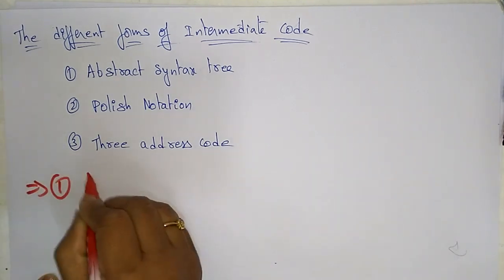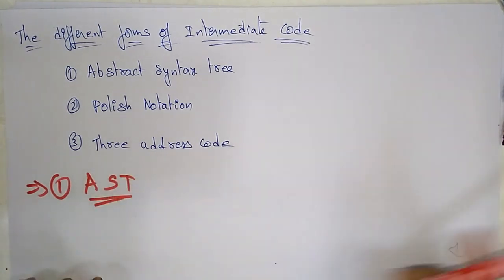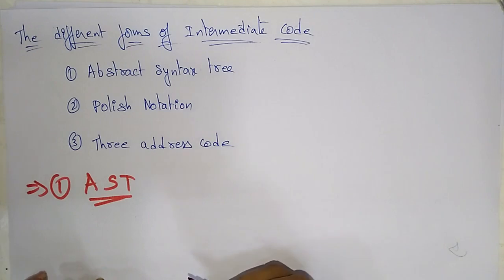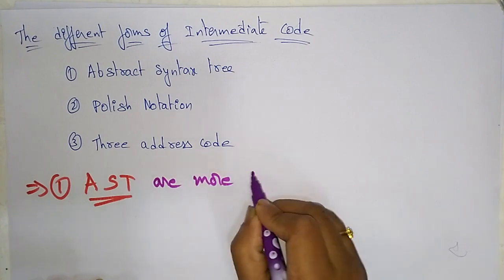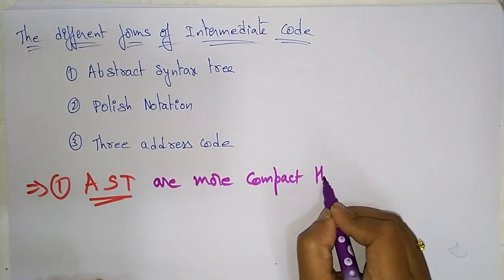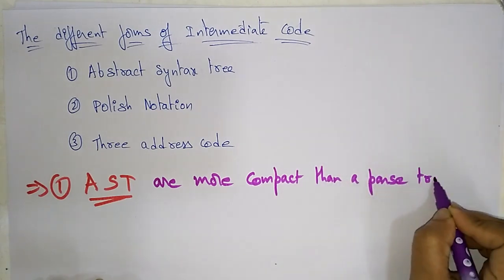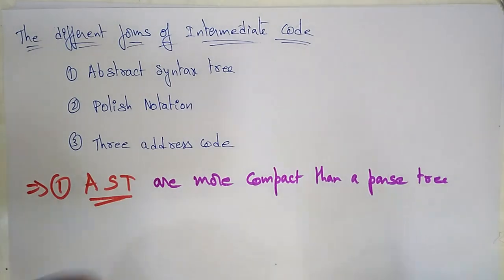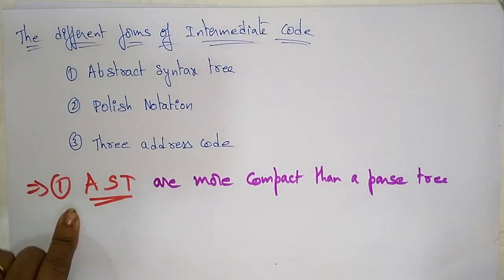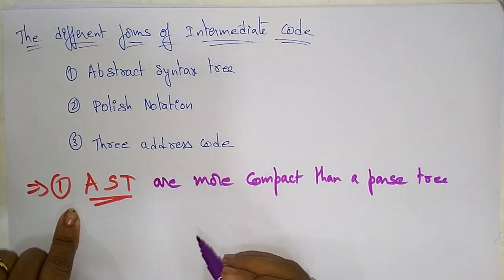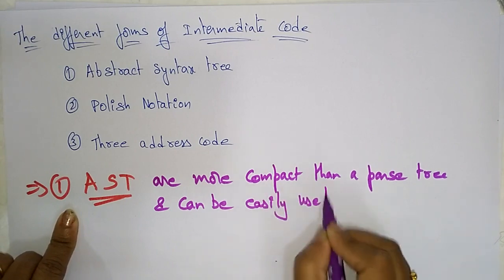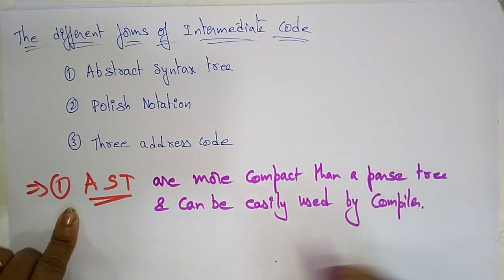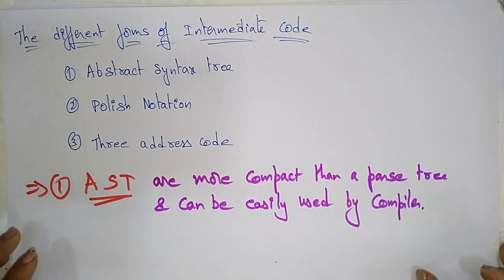First let's see what is this abstract syntax tree. The abstract syntax tree is more compact than a parse tree. The parse tree takes the expression and represents it in the form of a tree. This abstract syntax tree is more compact than a parse tree and can be easily used by the compiler.